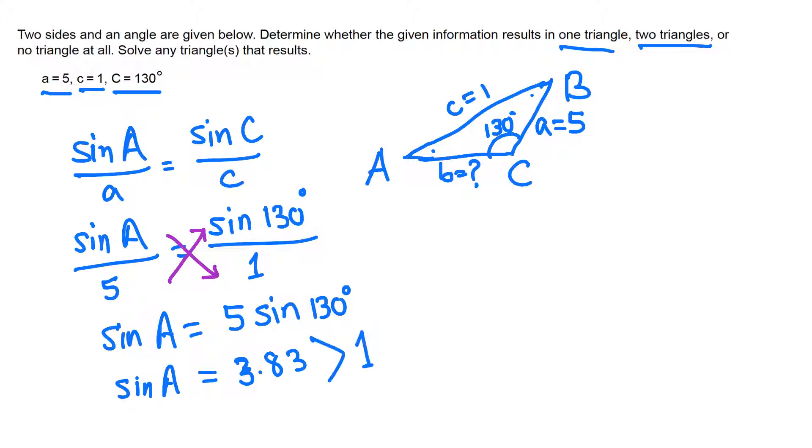That means we cannot have a triangle with this given information. So that implies there is no angle A, we cannot have angle A. The conclusion is no triangle.